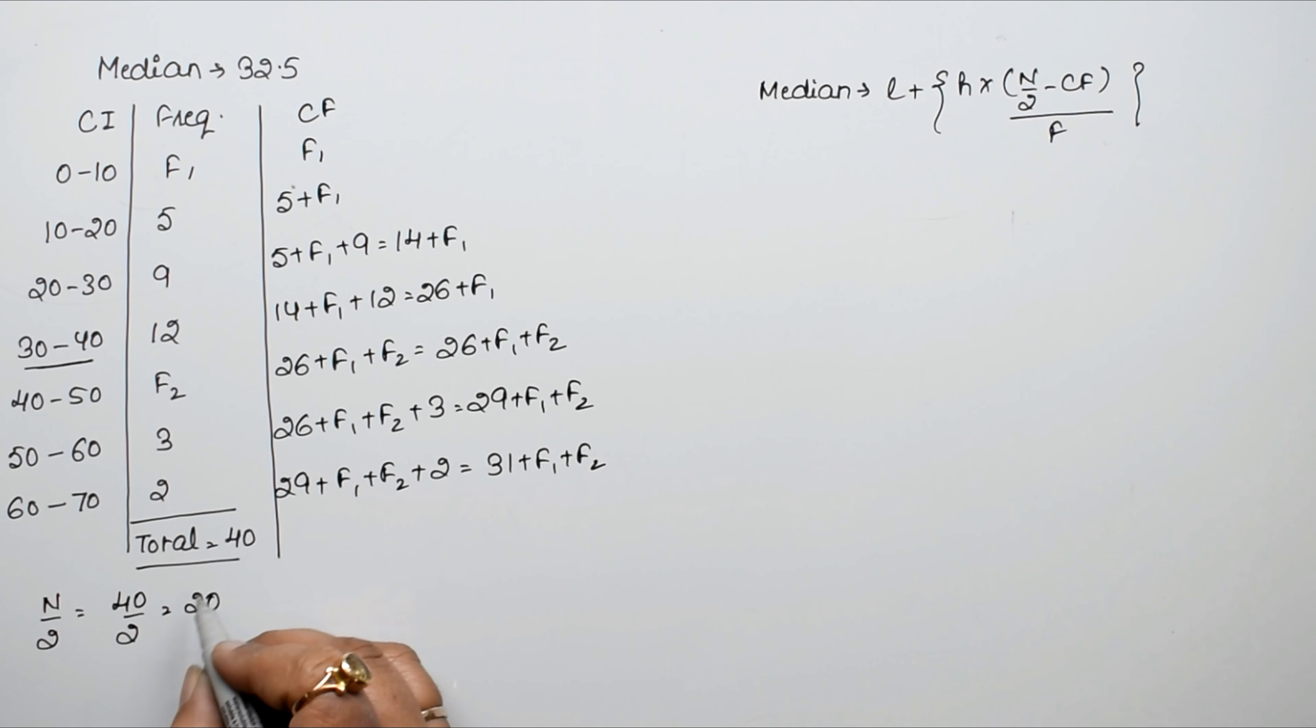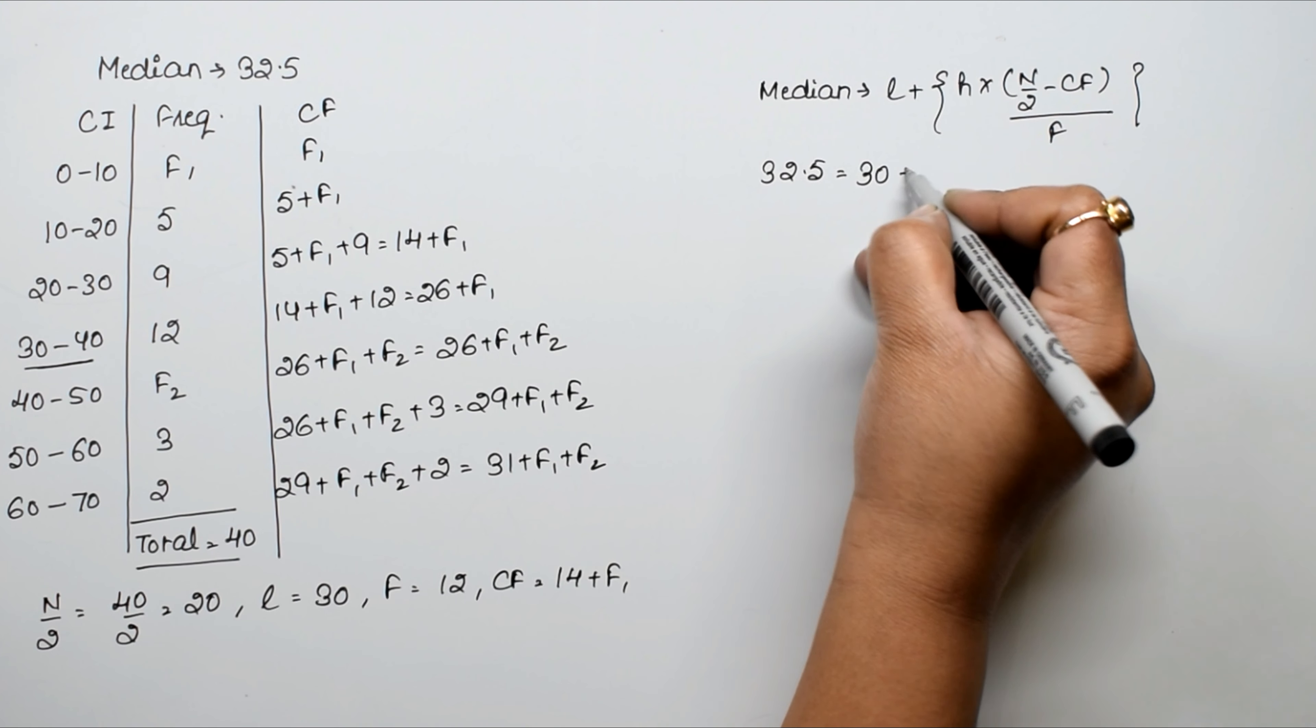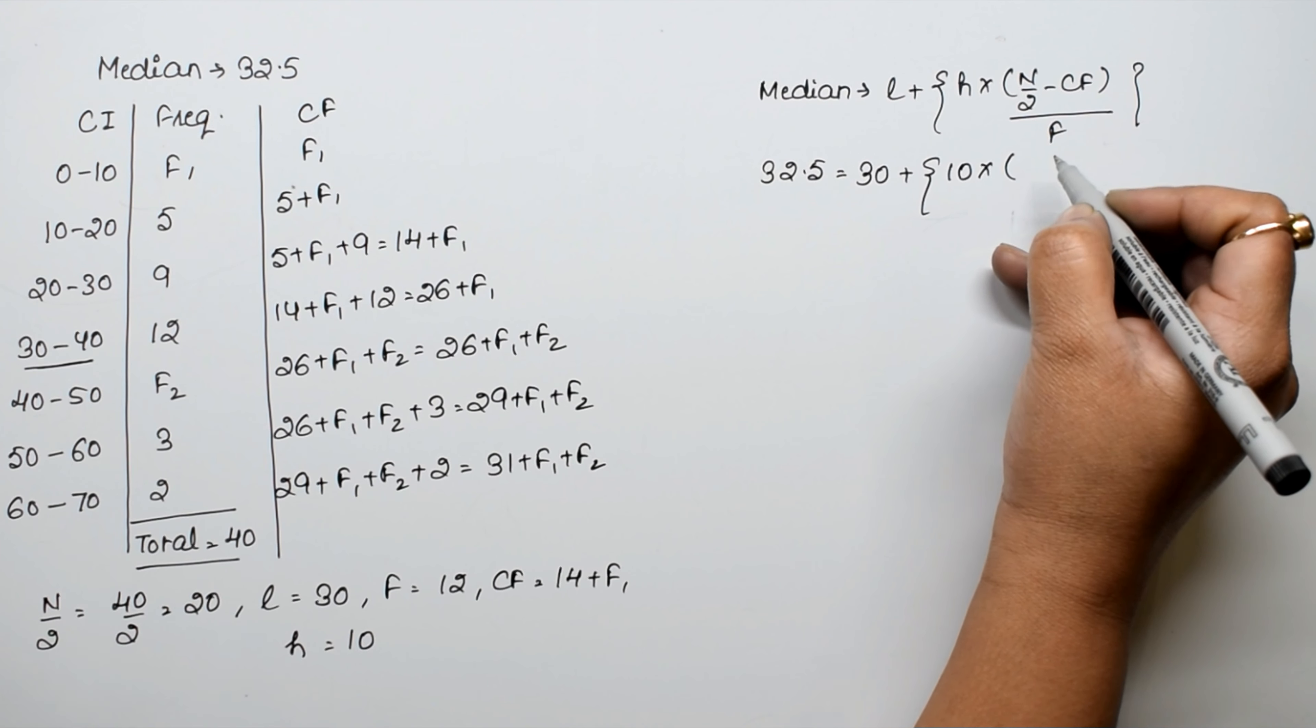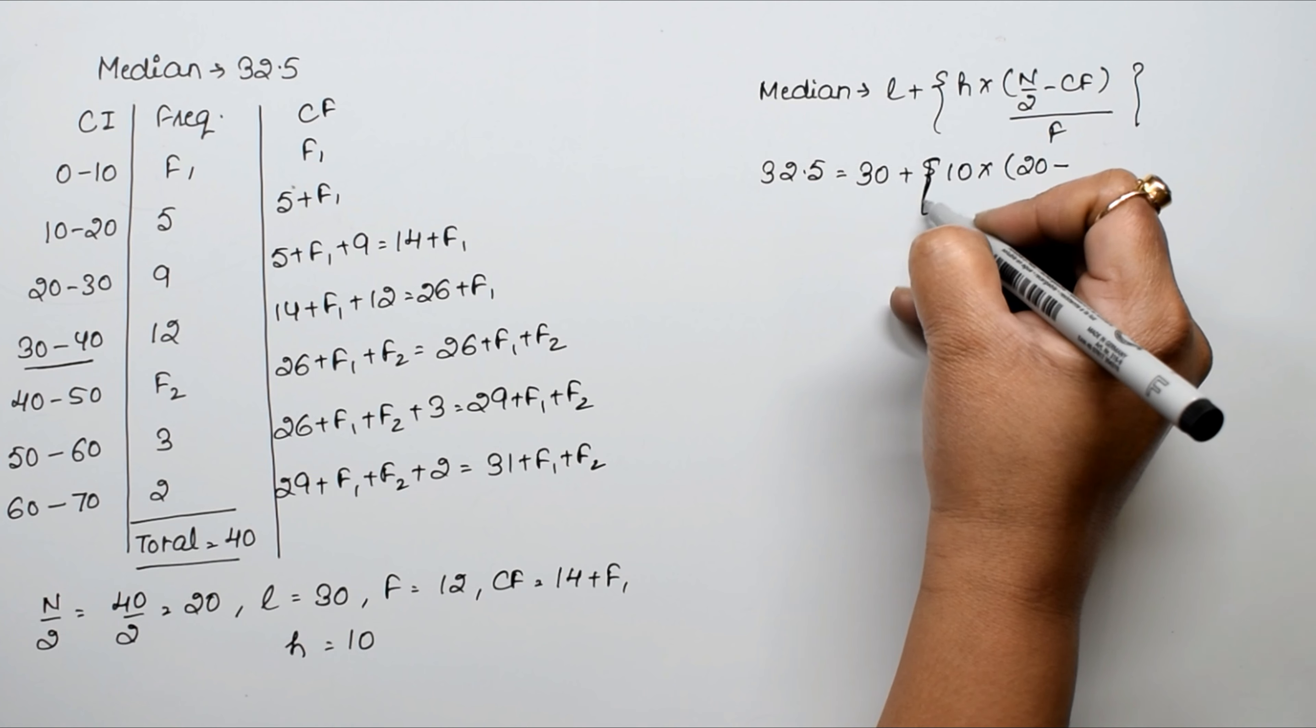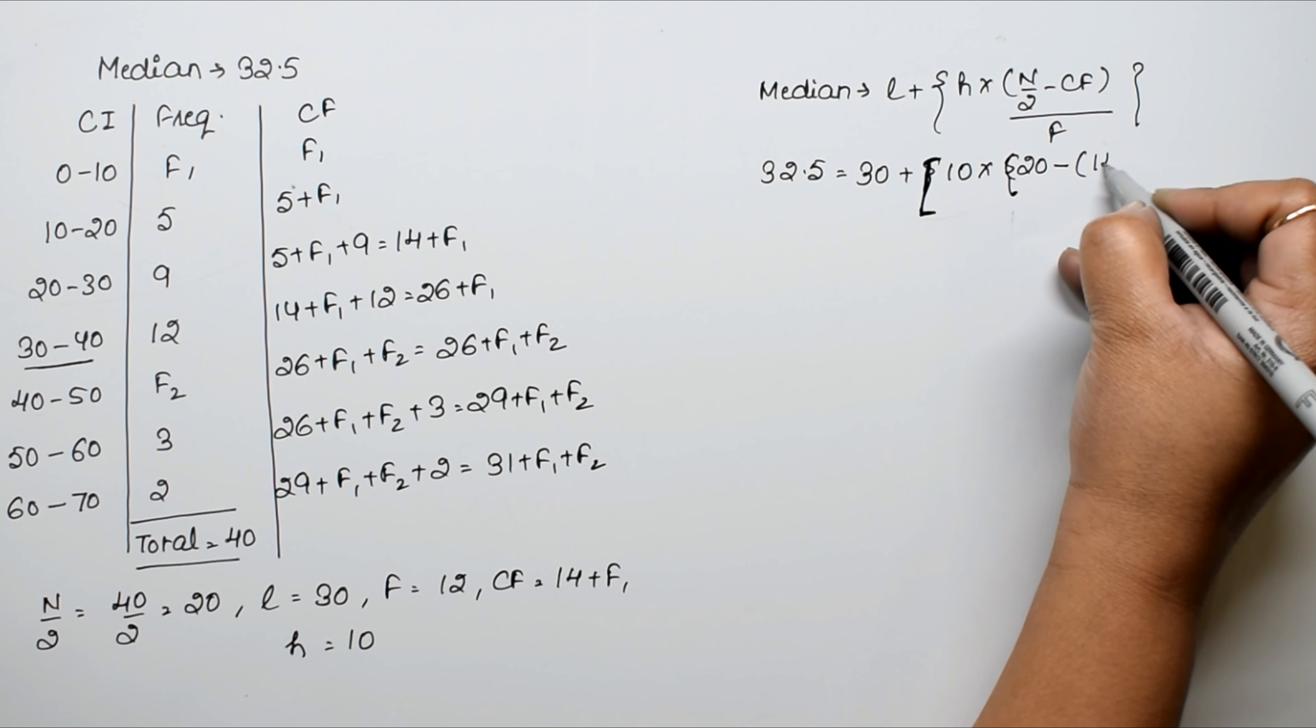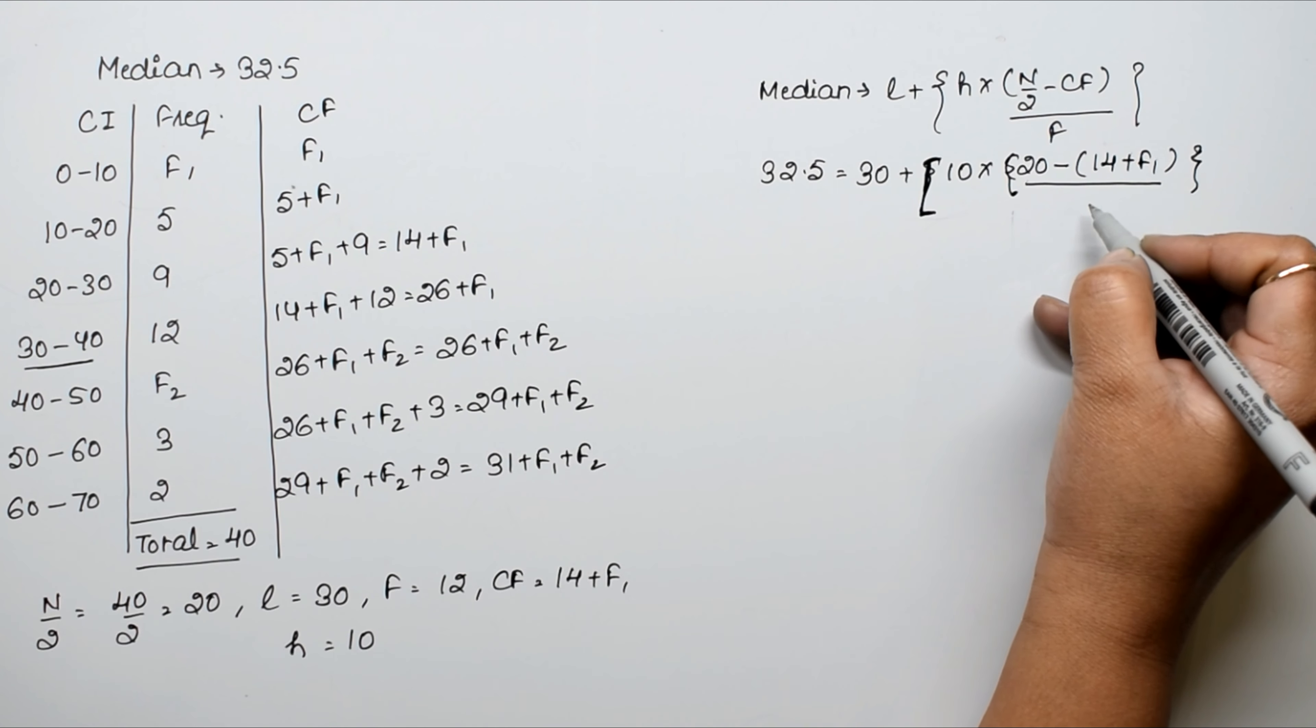We know the median, the lower limit L is 30, H is 10, frequency F is 12, and the cumulative frequency is 14 plus F1.